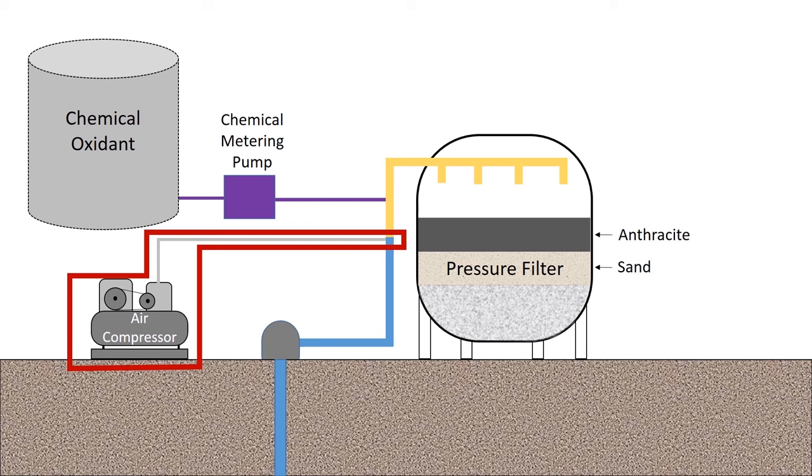So one method is by using air or some form of aeration. Here we have an air compressor, but it could be some other form of aeration where another type of aerator is used to oxidize iron more so than manganese.